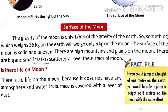The surface of the Moon is solid and uneven. There are high mountains and plains on the Moon. There are big and small craters scattered all over the surface of the Moon. There is no life on the Moon because it does not have any atmosphere and water. Its surface is covered with a layer of dust.